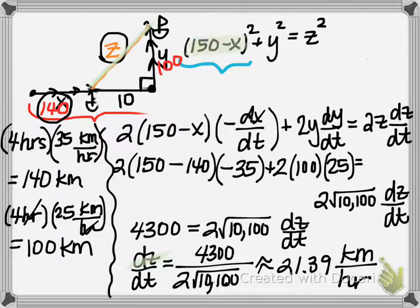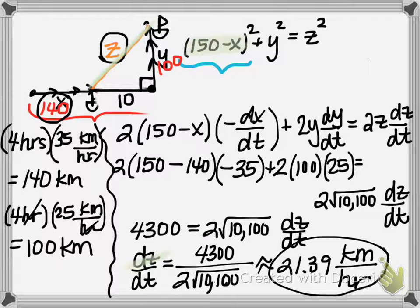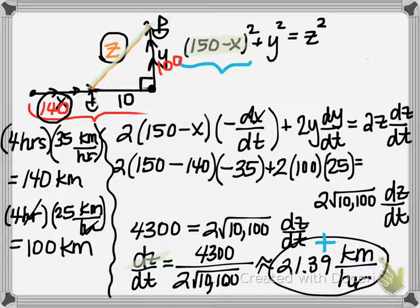My final answer written as a sentence: at 4 p.m., the distance between the ships is increasing at a rate of 21.39 kilometers per hour. The distance is increasing because we computed a positive rate of change, which indicates that the distance between the ships is getting larger.